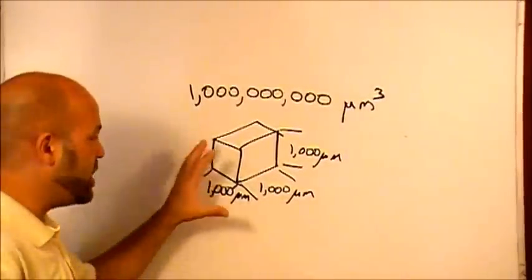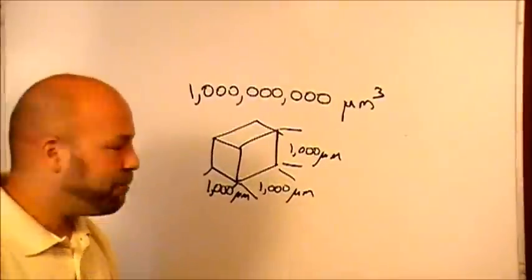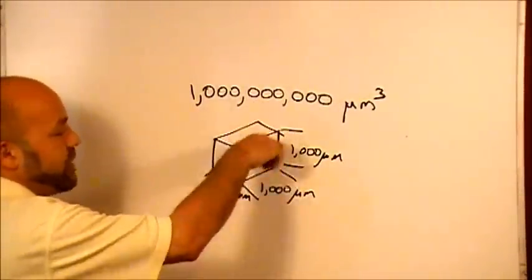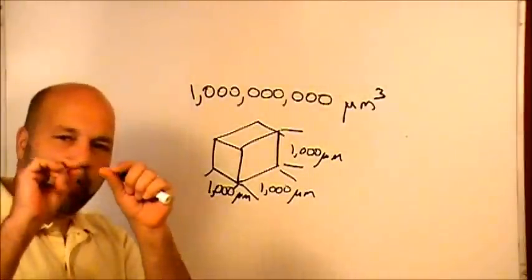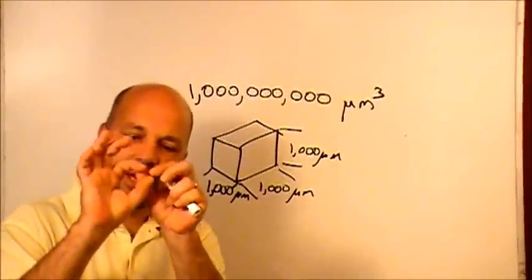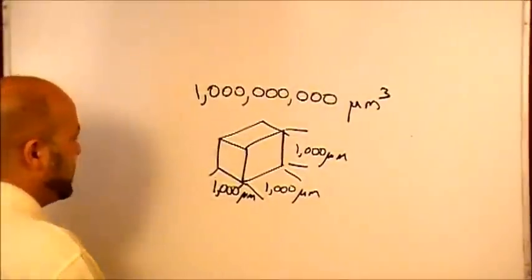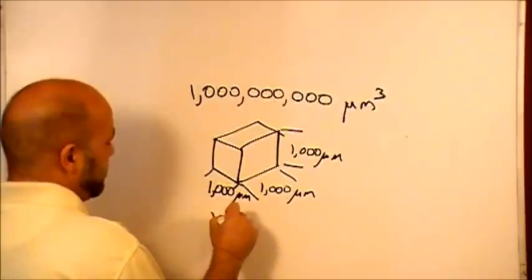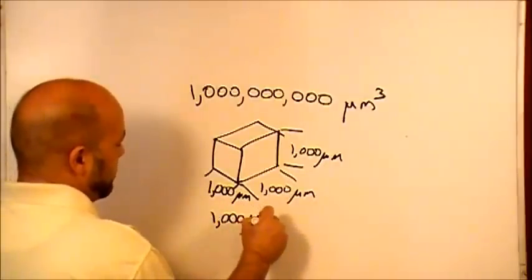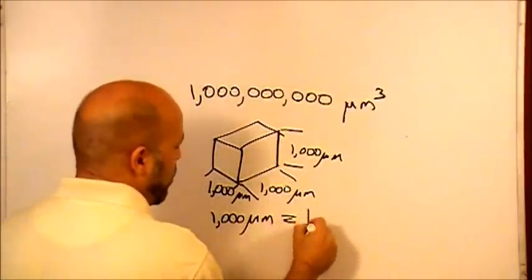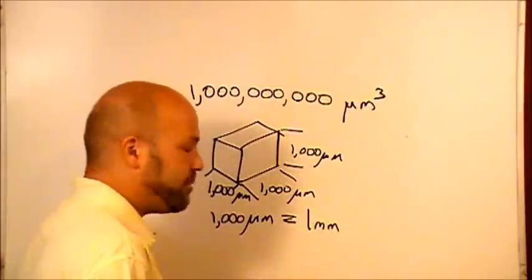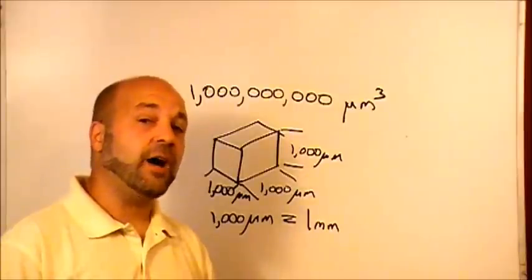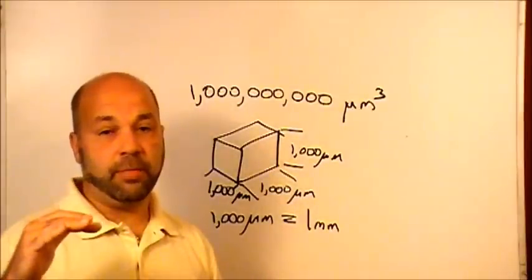So far, now we know that a BCM is a cube whose volume is 1,000 by 1,000 by 1,000 microns. But now we're going to get to the point where we actually can start to visualize a BCM. It just so happens that 1,000 microns, one of these dimensions, equals one millimeter. There are a million microns in a meter. There are a thousand millimeters in a meter. Therefore, there are a thousand microns in a millimeter.